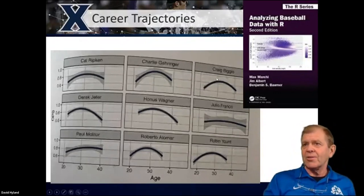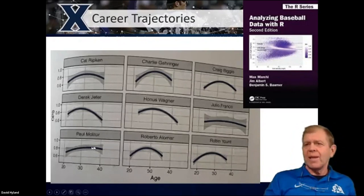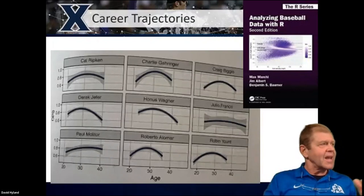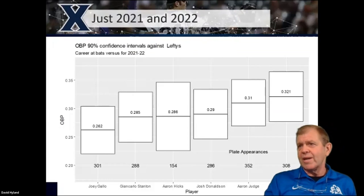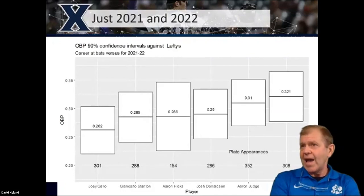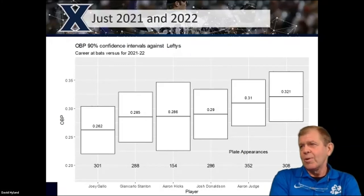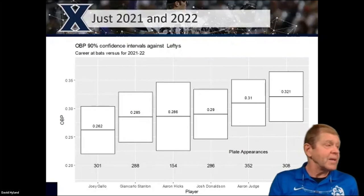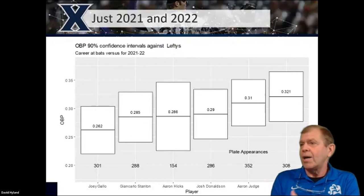One of the concepts in the book is career trajectories — players probably aren't the same distribution from year to year throughout their career. So what I did is look at just the last two years for each of these guys versus lefties. Again, we get quite a bit of overlap, not any clear guidance. Anthony Rizzo .321 versus lefties, Joey Gallo .262 — but I can't say statistically that Anthony Rizzo is necessarily better than Joey Gallo; it could just be random draws out of the jar.